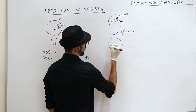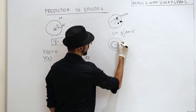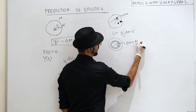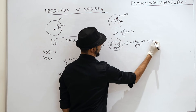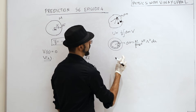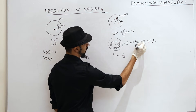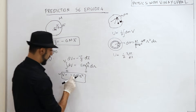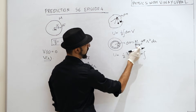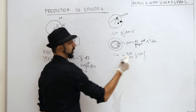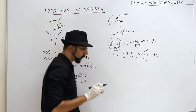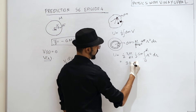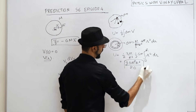For the uniform solid sphere, by symmetry I take a thin shell at radius r as my dm element. So dm = (M / (4/3)·π·R³) · 4π·r²·dr, which simplifies to (3M/R³)·r²·dr. The self-energy U = half · integral of V(r) · dm = half · integral from 0 to R of (half G·M·r²) · (3M/R³) · r²·dr. This gives an integral of r⁴·dr from 0 to R, equal to R⁵/5. So U = 3G·M²·R² / 20.